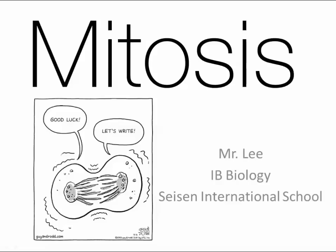We're going to be looking at mitosis. Mitosis is the specific dividing of the actual genetic material inside a cell, which ends up with two different cells. If you're actually looking at a cell at any given time, most likely it's in the part of the cell cycle called interphase.